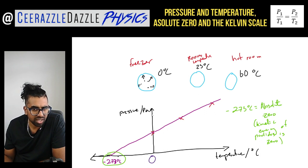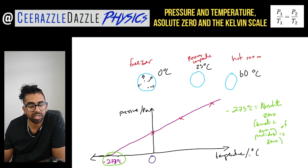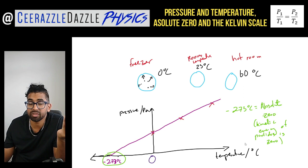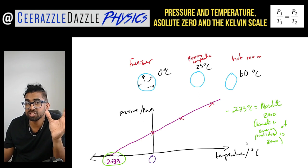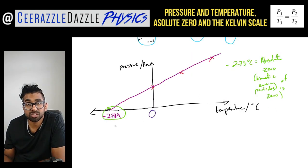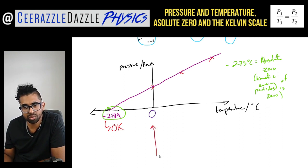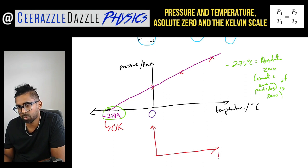From here we can get a graph that goes through the origin, but we need a different unit for temperature. We're going to introduce Kelvin, an alternative unit of temperature. You can convert from degrees Celsius to Kelvin using the following: minus 273 degrees Celsius is equal to zero Kelvin.